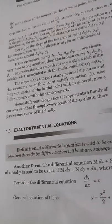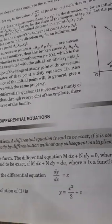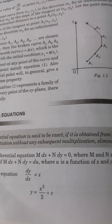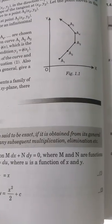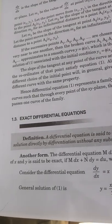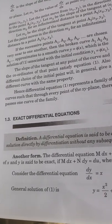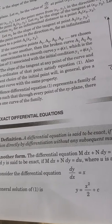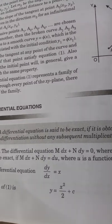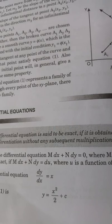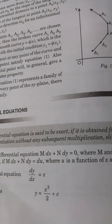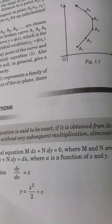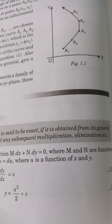Another form: The differential equation M dx + N dy = 0, where M and N are functions of x and y, is said to be exact if M dx + N dy can be written as du, the differential of u, where u is a function of x and y.